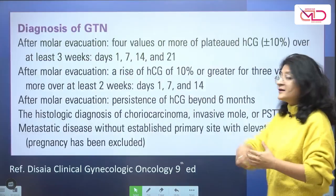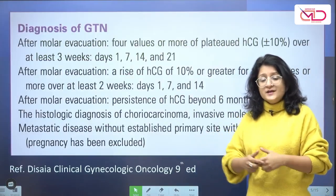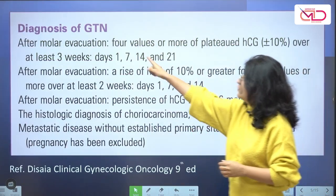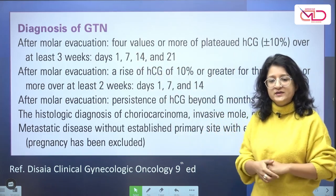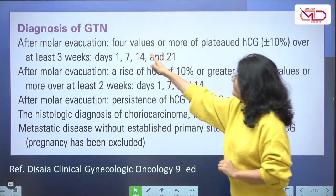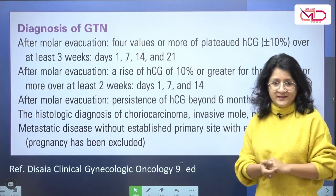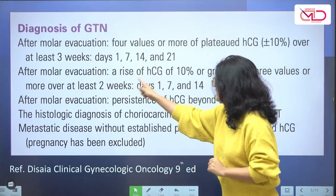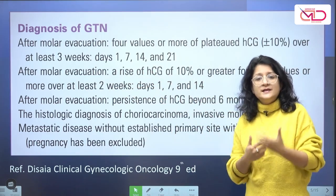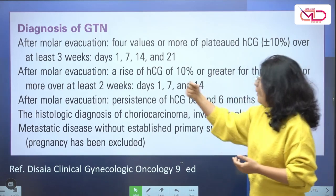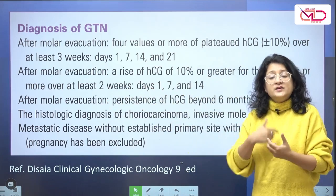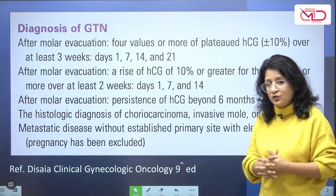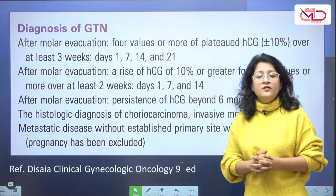There are a number of clinical circumstances around which you diagnose GTN, and there is a criteria for diagnosis of GTN you should remember. After a molar pregnancy event, four values or more showing plateauing of beta-HCG, or a rise of HCG of 10% or greater for three consecutive values, or persistence of HCG even beyond six months after evacuation — any of these would make the diagnosis of GTN.